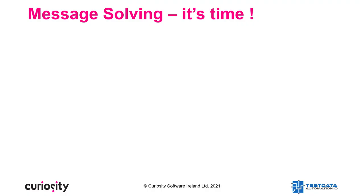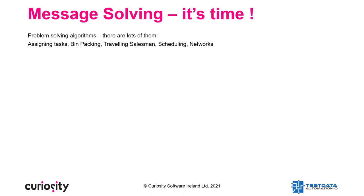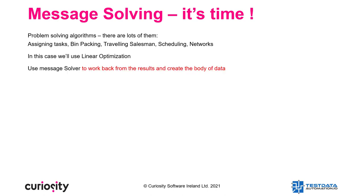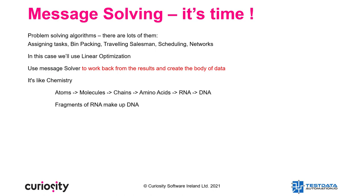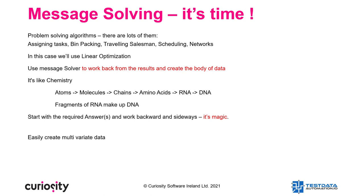Now I'm going to switch gears and talk about message solving. There are many algorithms around that can solve problems — assigning tasks, bin packing, travelling salesman, scheduling, networks, etc. In this case we're going to use linear optimization with message solver to work backwards from the results and create the body of the data. It's a bit like chemistry — atoms work their way up to RNA, then to DNA, and fragments of RNA make up DNA. We start with the required answers and work backwards. You can use it to create multivariate data, integrated data, and also to filter out rarer data — for example in problems like fraud detection.